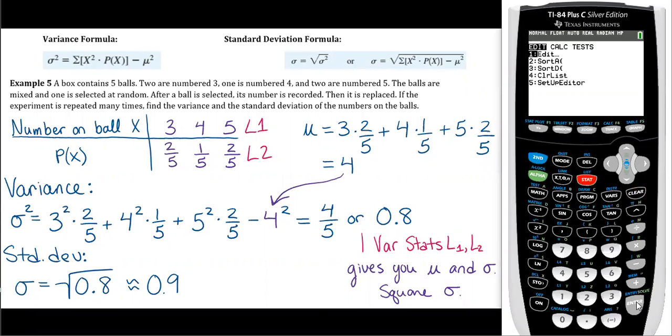So I'm going to go to stat, enter, and then L1 is going to be the three, four, and five.